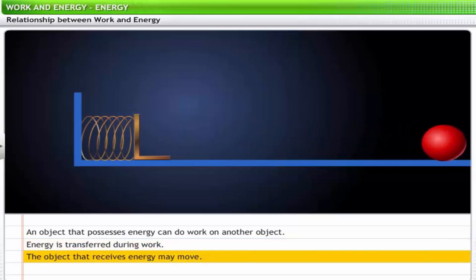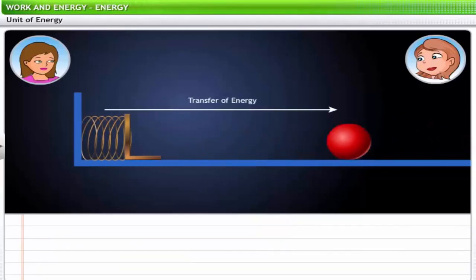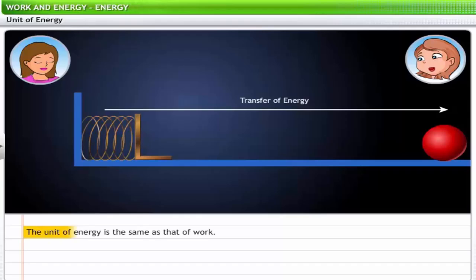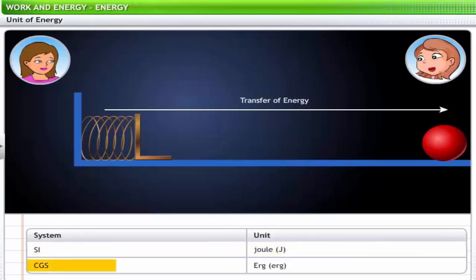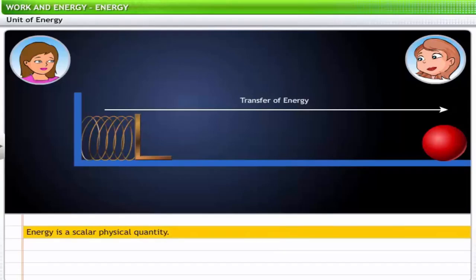So work is basically a transfer of energy. The unit of energy is the same as that of work — thus, the unit of energy in the SI system is Joule, and in the CGS system, Erg. Like work, energy is also a scalar physical quantity.